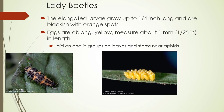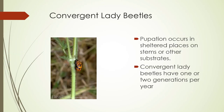The convergent lady beetle has an elongated larva that grows to about a quarter inch long. The eggs are oblong and yellow, laid on end in groups on leaves and stems near aphids so the larvae can go right for them. You may start seeing pupae soon — they'll often be on plants that have had aphids.